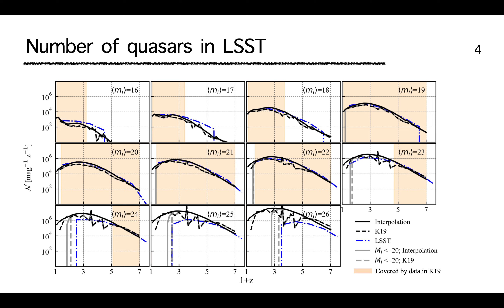This is our first set of results. Our prediction for the number of quasars in LSST are shown here with the solid black curves. These numbers are a function of redshift in 11 different i-magnitude bins, and we estimate n for 50 redshift values per bin. For reference, we also compared with the number computed from the fiducial K19 luminosity functions, as well as the results from the official LSST science book. The curves generally agree, especially at the most relevant redshifts between 2 to 3.